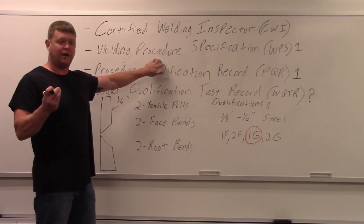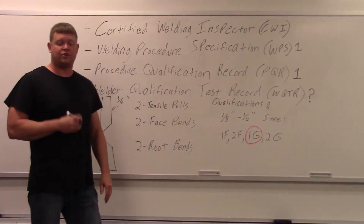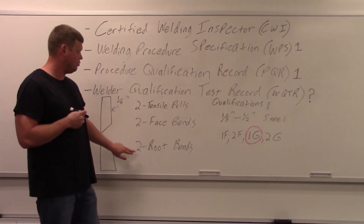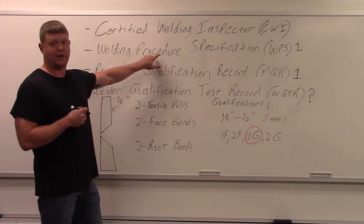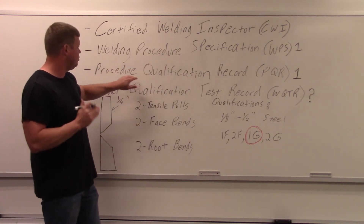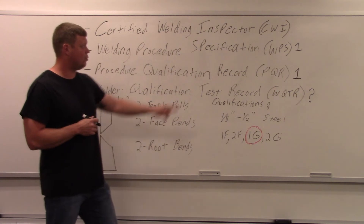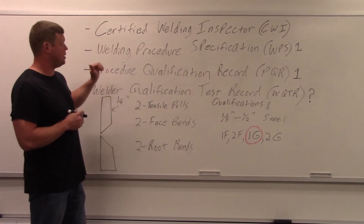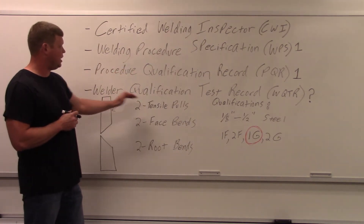The WPS is the document you give to welders to get certified. But before you can do that, you have to do a Procedure Qualification Record, commonly referred to as a PQR. That's the testing we just looked up - two tensile pulls, two face bends, two root bends. When those tests pass, that certifies that the WPS is good to hand out to welders. Until you do the PQR, the WPS is useless. Once the PQR is done, confirming the WPS specifications are good, you can move to welder qualification test records.